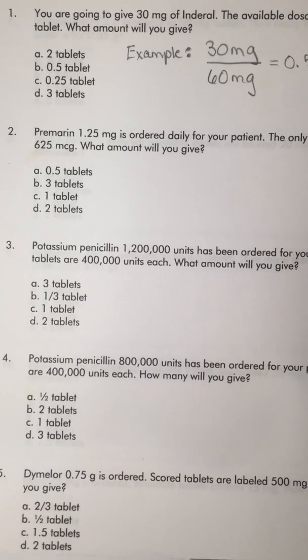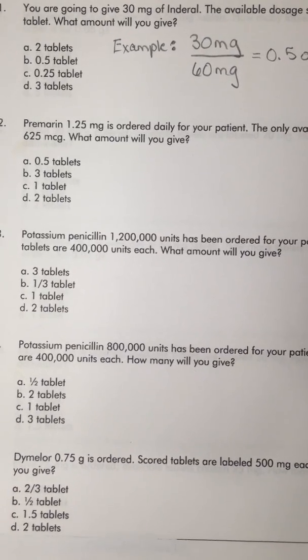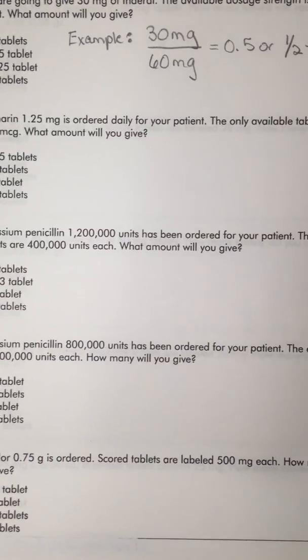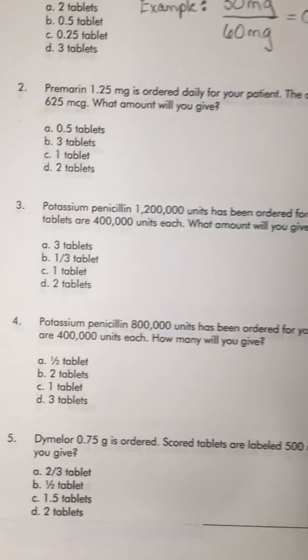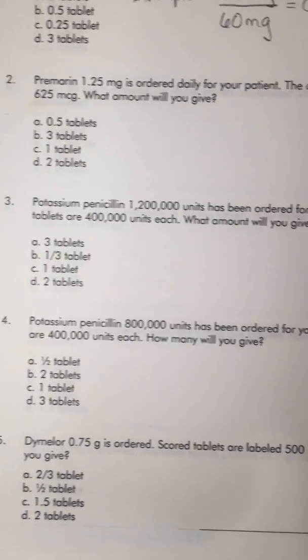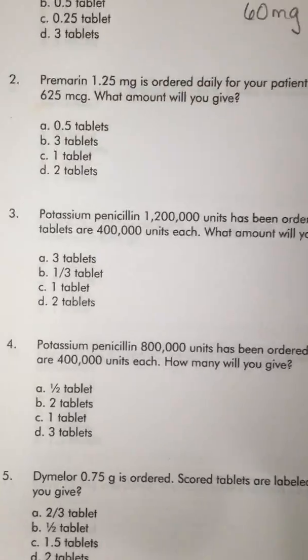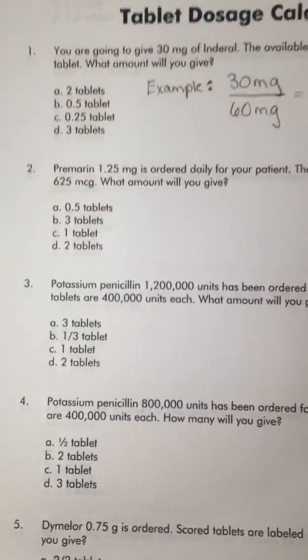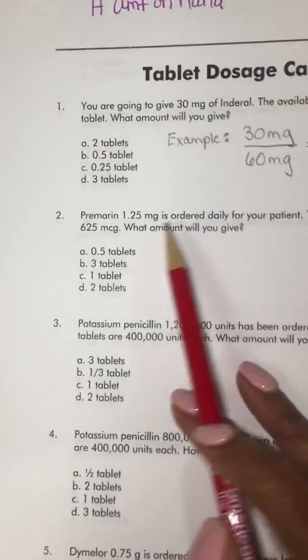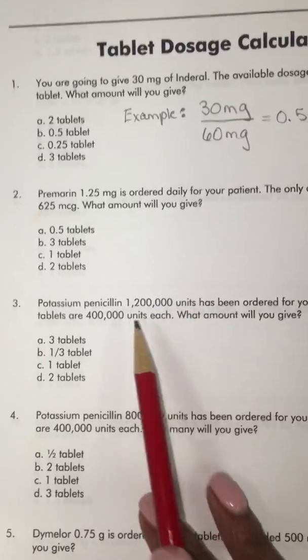It says potassium penicillin 1,200,000 units has been ordered for your patient. The available tablets are 400,000 units each. What amount will you give? This is fairly easy. The only thing you're going to do is, since they're talking about units, not micrograms or milligrams, we're just going to divide.